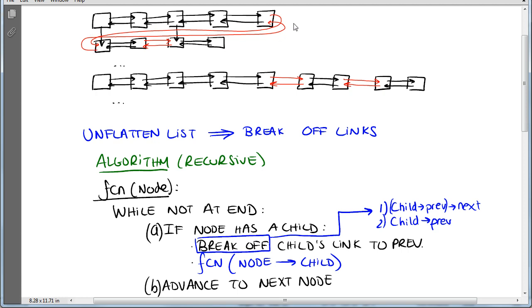then instead of creating a link, we'll break off the link we created previously - the child's link to the previous element. Once we break it off, we'll call the function again on that node and repeat the process, asking the same question for this node and its list.